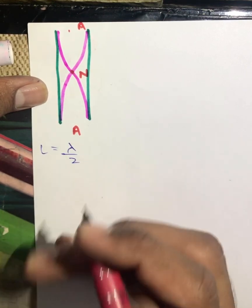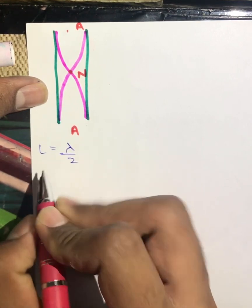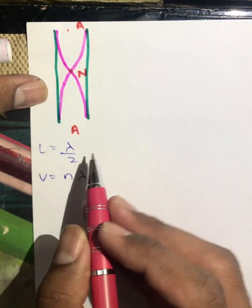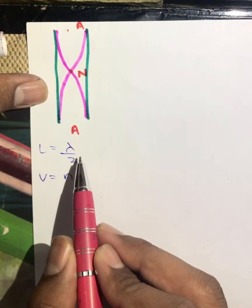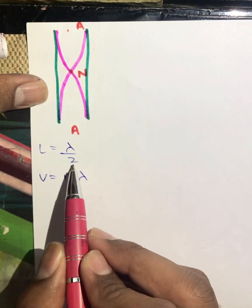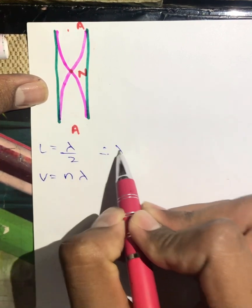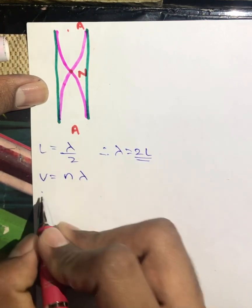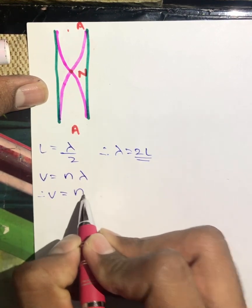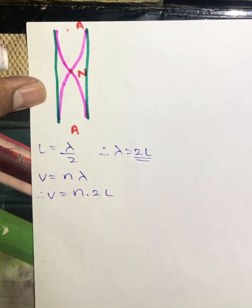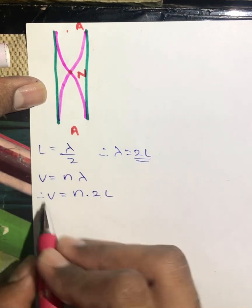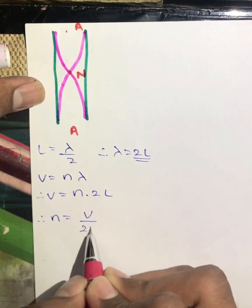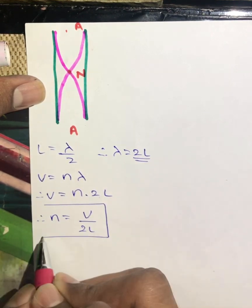We know the formula for velocity is v = n × λ. From this condition, substituting λ = 2L (taking 2 to the left-hand side gives λ = 2L), we substitute into the equation: velocity equals n × 2L. Taking 2L to the left-hand side, we get the frequency from this first mode as n = v / (2L).